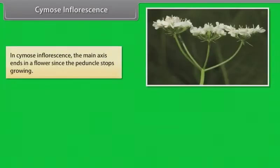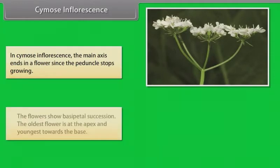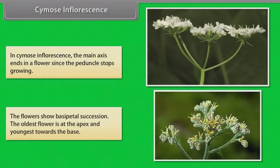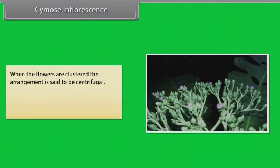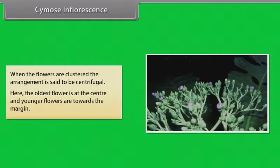In cymose inflorescence, the main axis ends in a flower since the peduncle stops growing. The flowers show basipetal succession; the oldest flower is at the apex and the youngest towards the base. When flowers are clustered, the arrangement is centrifugal — the oldest flower is at the center and younger flowers are towards the margin.